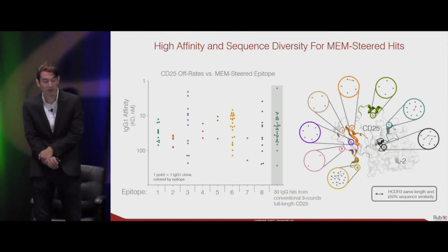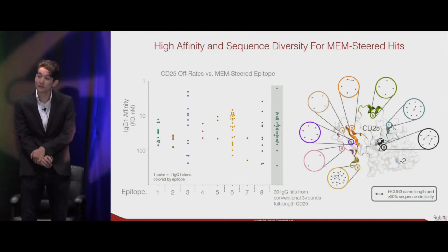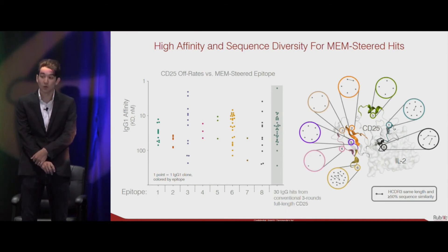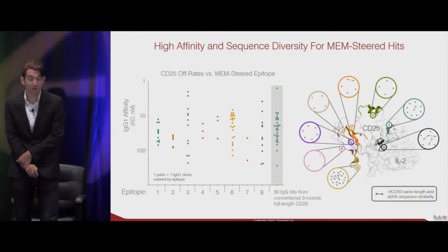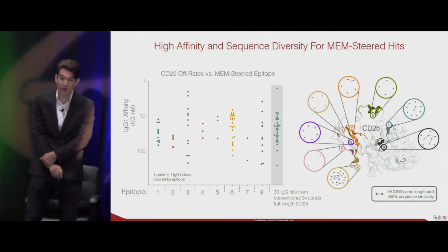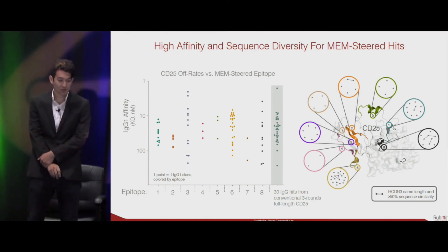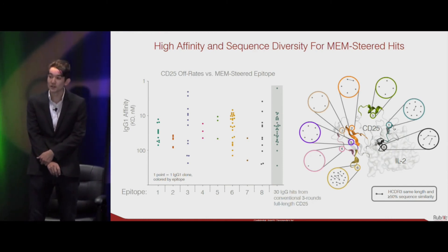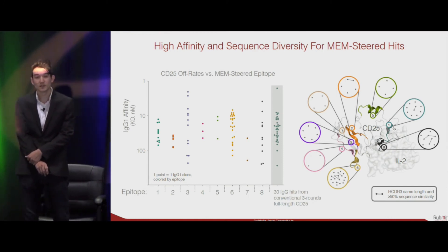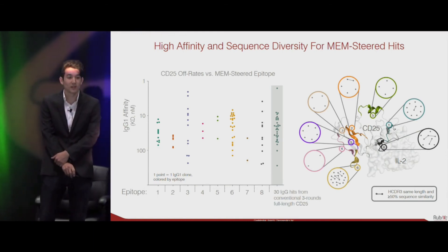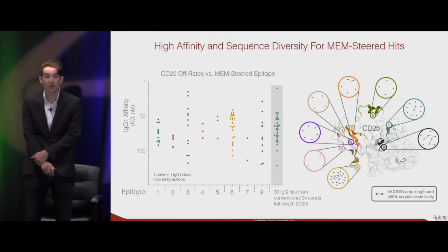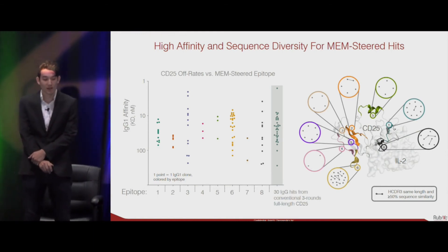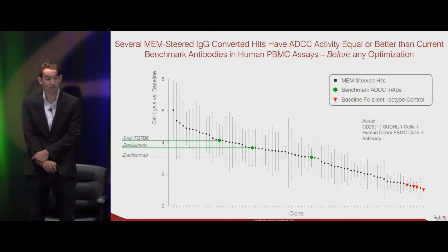On the left you see the affinities of our MEM programs — our antibodies are roughly the same as what you get from conventional antibody selection approaches. On the right, a cluster analysis of sequences from our individual MEM campaigns showed that we are still getting significant sequence diversity.